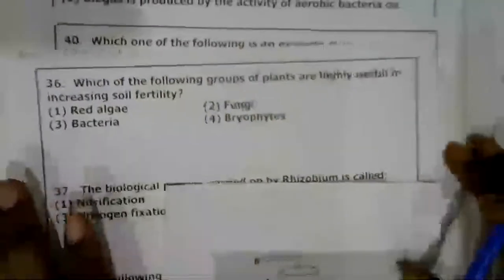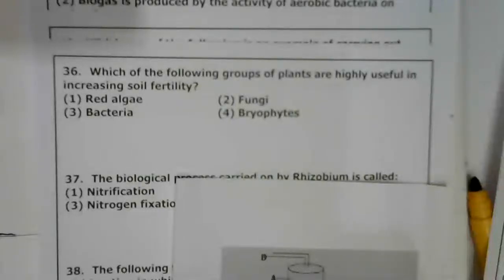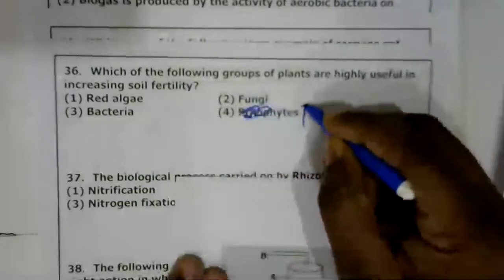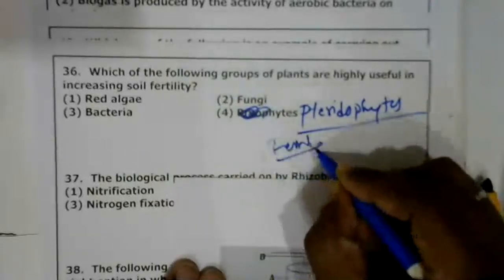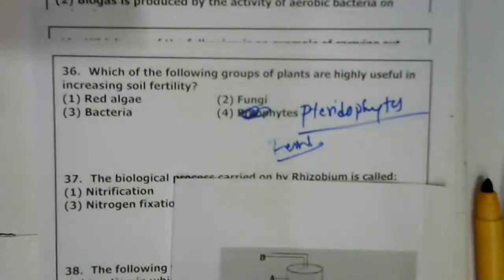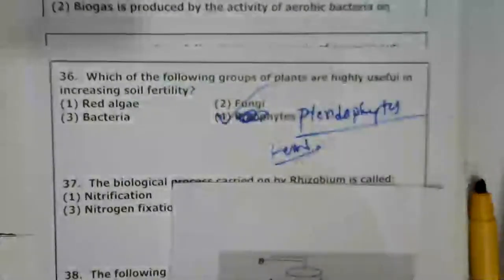Question 36: Which group of plants is highly useful in increasing soil fertility? There is a typographical error in the question. The option should read 'pterophytes' (ferns), not as printed. In paddy fields, the fern Azolla pinnata increases soil fertility. The answer including red algae, fungi, bacteria, and pterophytes — option 4 — would be correct. This is an error from our end.